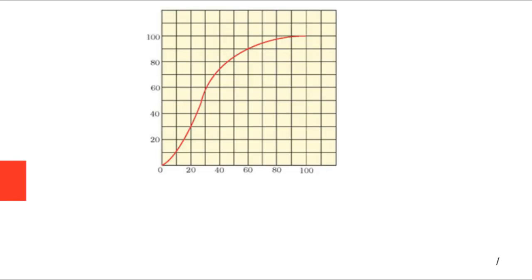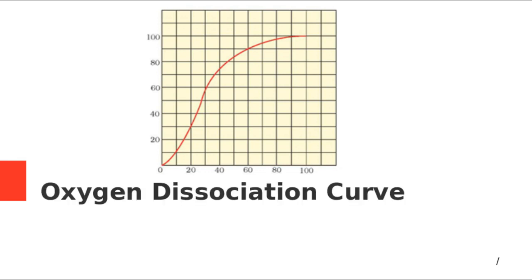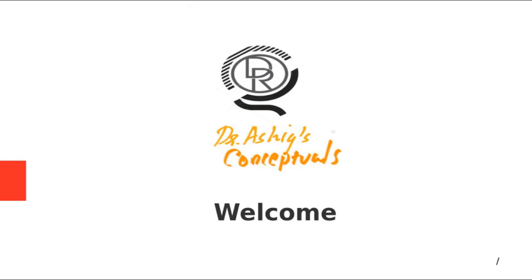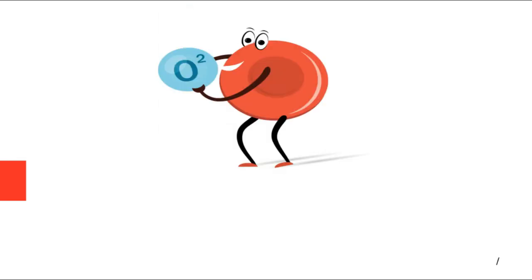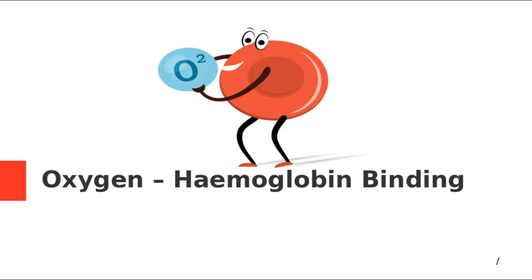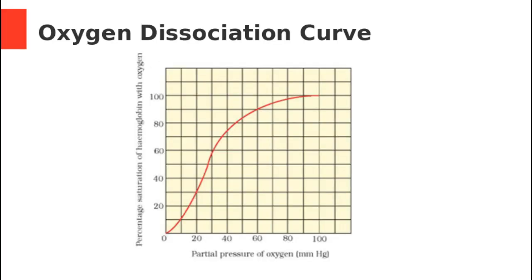Hi everybody, this graph is a familiar graph — you have seen it in your textbook many many times. Let's discuss the details of this graph today. This is known as the oxygen dissociation curve. Welcome to Dr. Ashik's Conceptuals. Before we go to the topic, I have done a previous video on oxygen-hemoglobin binding — please do watch it, because that video forms the basis of today's discussion.